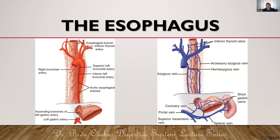In particular, remember that the lower abdominal esophagus receives esophageal branches of the left gastric artery — that's where the clinical implication comes from. For venous drainage: the cervical esophagus drains to the inferior thyroid veins, the thoracic esophagus drains to the azygous venous system, and the abdominal esophagus drains to the left gastric vein, which takes blood to the portal vein going to the liver.